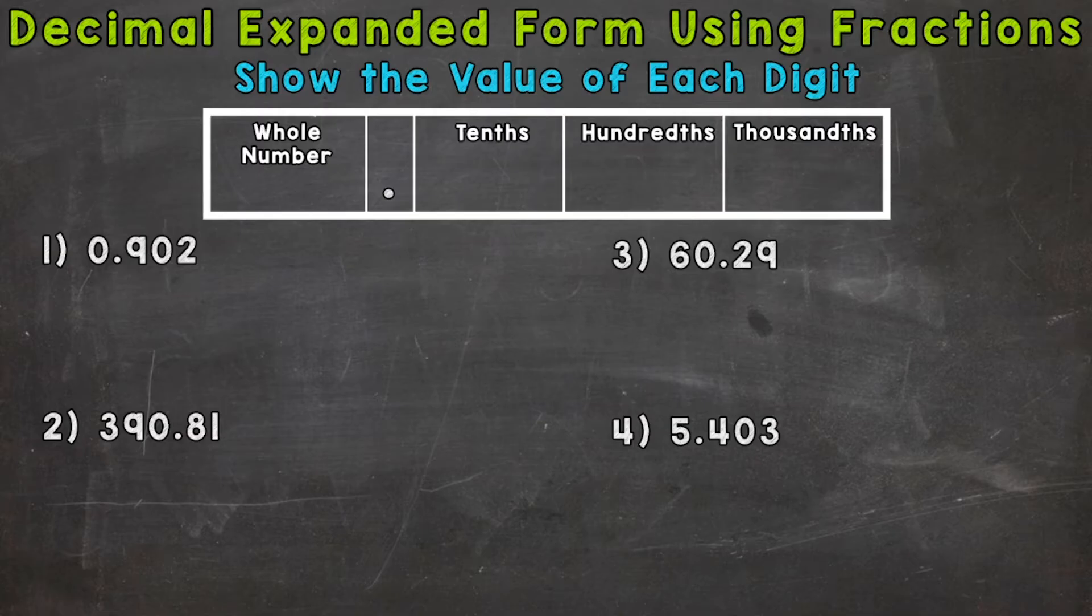So let's jump into number one, where we have 902 thousandths. Now, I'm going to use the place value chart at the top of your screen for number one here to break this number down and really see what the value of each digit is. So we start with whole number, the whole number portion of this decimal, and we don't have a whole number. We have a zero there. So let's write zero for our whole number.